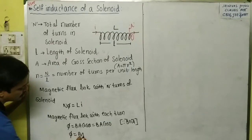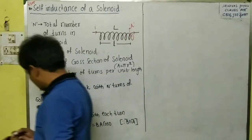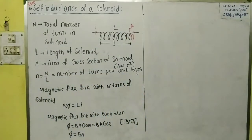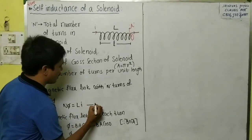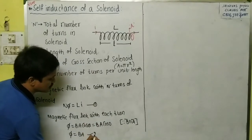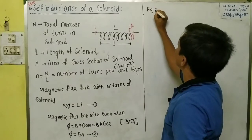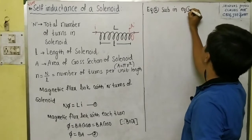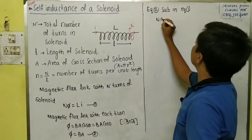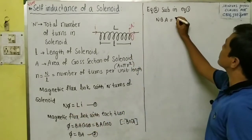Substituting φ = B·A into the equation Nφ = L·I (call this equation 1), we get N·B·A = L·I. We take equation 2 as φ = B·A, and substituting equation 2 into equation 1 gives N·B·A = L·I.